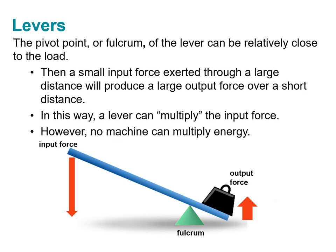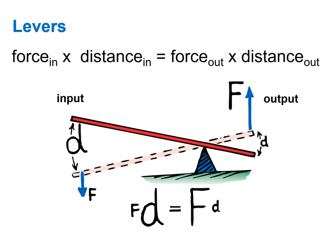However, this almost seems too good to be true. A small force somehow put in results in a large force output. It's like you're almost getting something for nothing. Now, earlier in the course, I'm sure you learned about the principle of conservation of energy. So there's no way that a machine such as this lever could multiply energy.